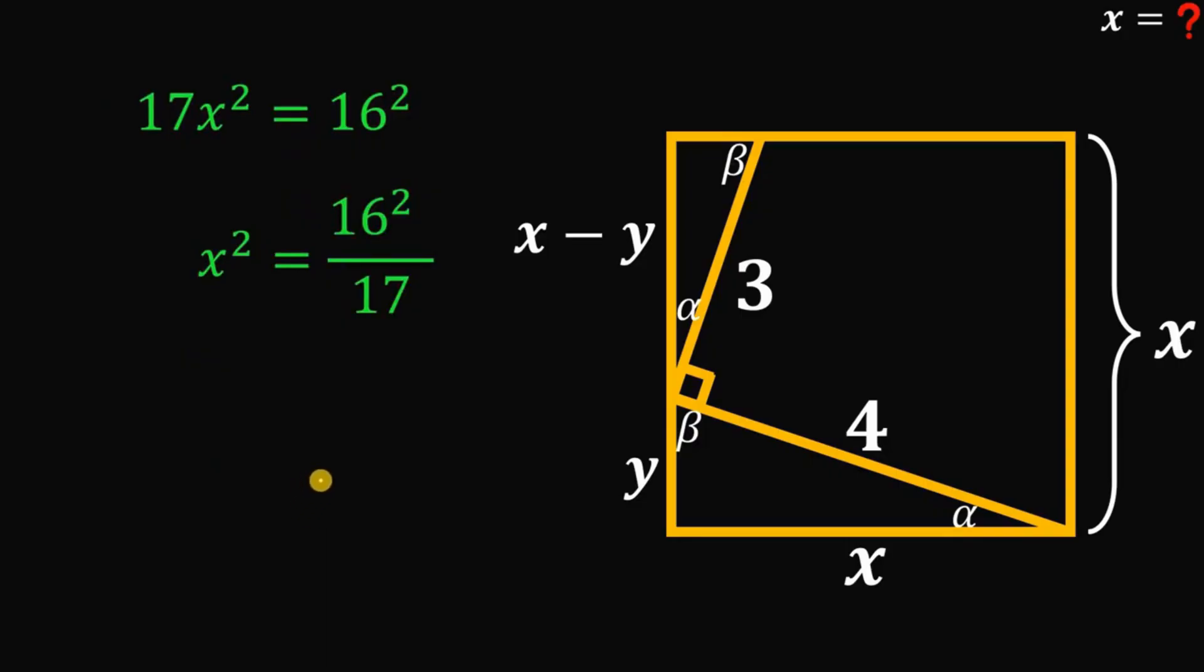x here is a positive number. So we don't care about the negative value of x. Get the square root on both sides. We have x equals 16 over square root of 17.